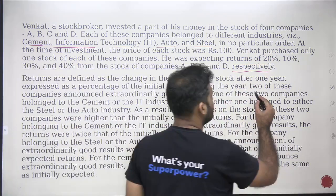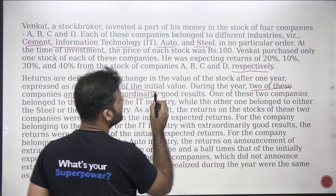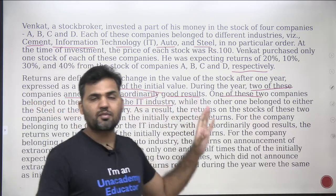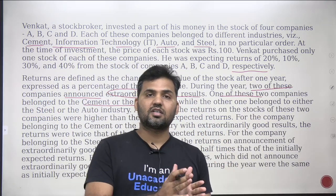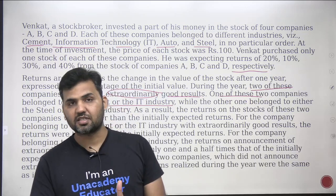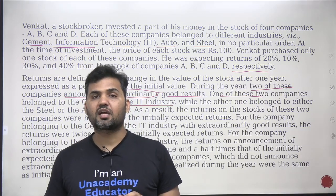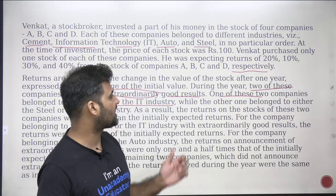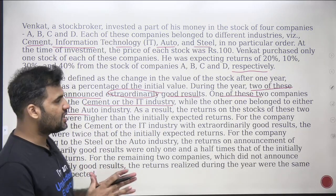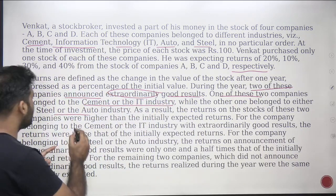During the year, two of these companies announced extraordinarily good results. One of these two companies belongs to the C-Mate or IT industry, and the other belongs to either the Steel or Auto industry. Extraordinary good results mean one of the companies is giving you a return which is more than its expectation. The companies giving you more than the expected result — one belongs to C-Mate or IT, and one belongs to Steel or Auto.